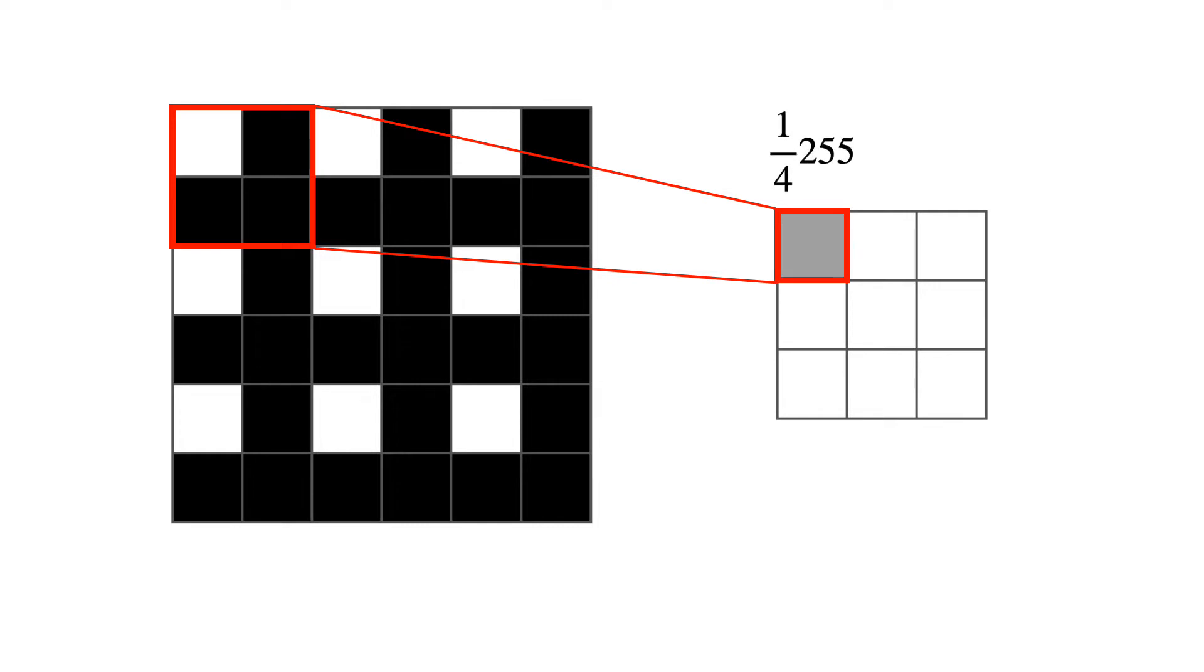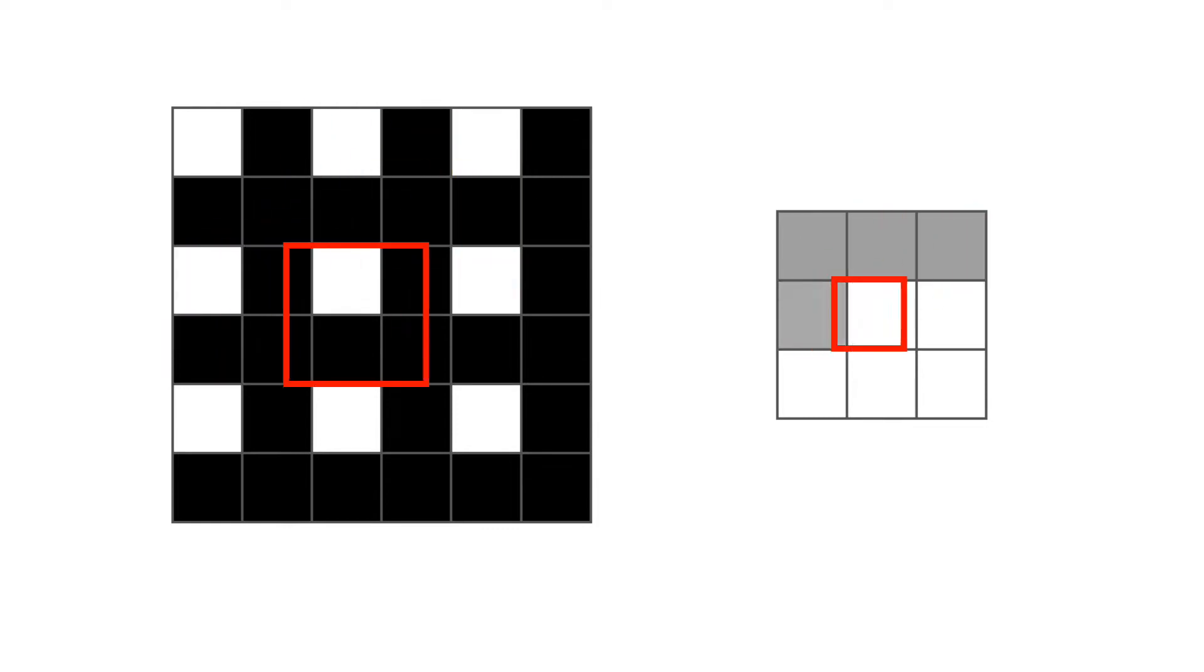That's one quarter of 255, which is 64. And you can repeat this for each of the pixels on the right. This is called mean filtering.